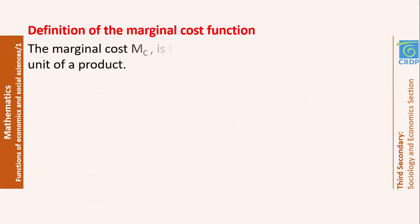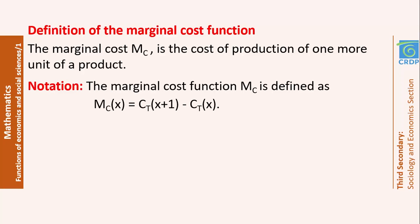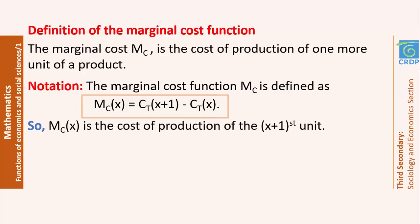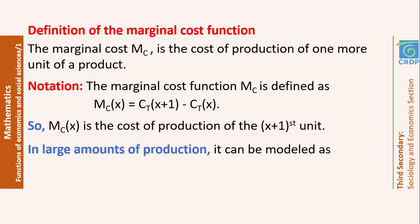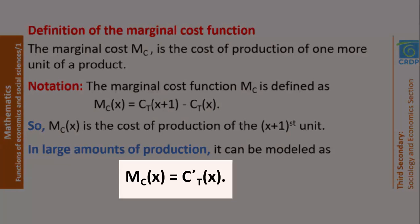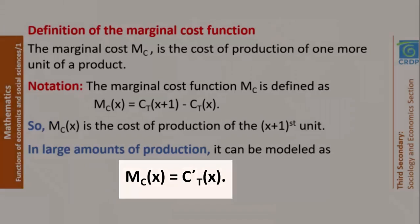What is the marginal cost function? The marginal cost function, denoted by mc, is the cost of production of one more unit of a product. If we already produced x units, the cost of production of the (x+1)th unit is the marginal cost, defined as mc(x) = Ct(x+1) − Ct(x). In large quantities, we can model the marginal cost by the derivative of the total cost function, so mc(x) = Ct′(x). This rule can be applied whenever we have a large amount of production.